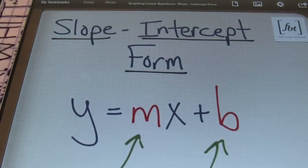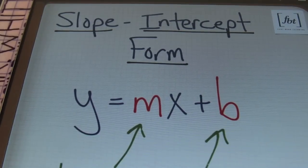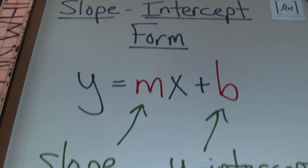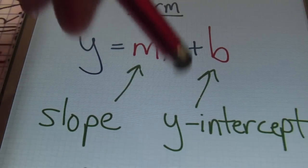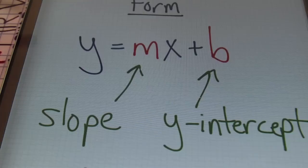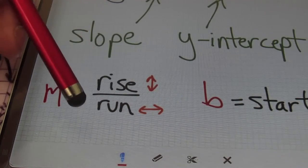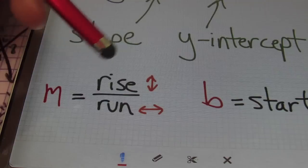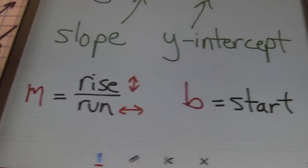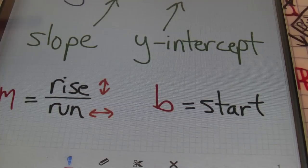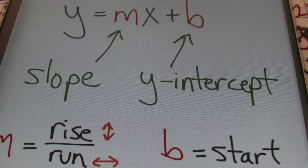All right, here we are. The slope-intercept form of a linear equation is Y equals MX plus B. The M is going to stand for the slope, and the B is going to represent the Y-intercept — in other words, that's where the line crosses the Y-axis. The slope, represented by M, is equivalent to the rise over the run. Our rise goes up and down; our run goes left to right. The B value, that Y-intercept, is going to be the number that we start graphing with when using the Y equals MX plus B form.